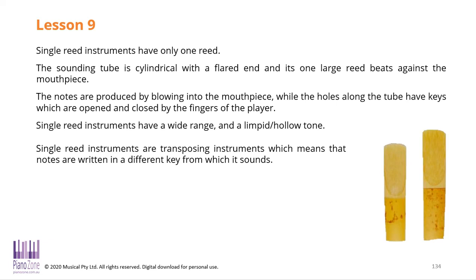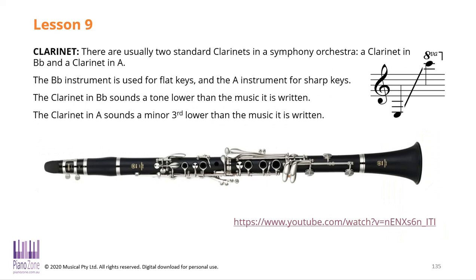Single reed instruments have, as the name suggests, one reed, and usually there's a flare at the other end of the instrument. A good example is a clarinet — it has the reed at one end and flares at the other to produce a mellow, nasal sort of sound. There are two main clarinets. The B-flat clarinet is used most often in orchestras. It's called a transposing instrument: when a B-flat clarinet plays a C, it sounds like a B-flat. So if you're writing in C major and you want the clarinet to sound in C major, you have to write everything up a tone — the B-flat clarinet plays in D major while everyone else plays in C major.